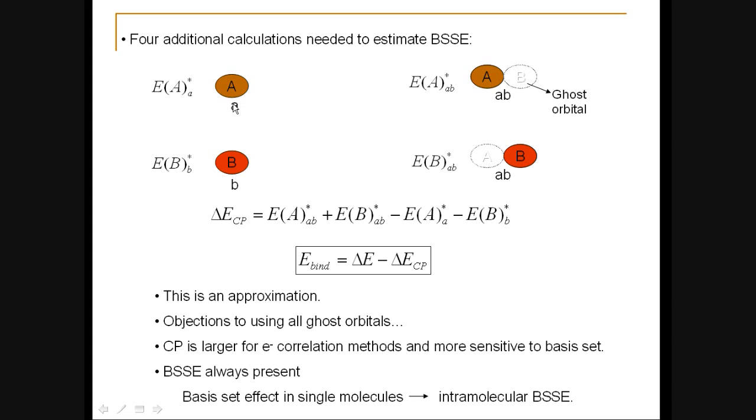And we do this calculation at the geometry of the complex, which is here. And that's why I show it as a distorted circle. And I denote this energy as this here. We do the same thing for B, this time with the corresponding basis set on B.